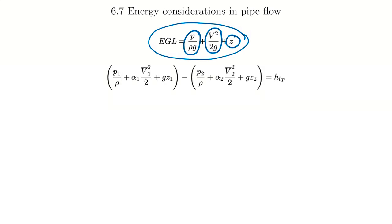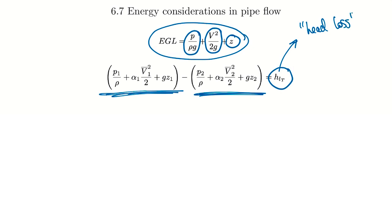At one section of a pipe we have mechanical energy terms, and at a second section we have mechanical energy terms. If it were just Bernoulli flow those would be equal, but friction causes a difference between them — that term is called head loss. Friction generates heat, so when we look at an energy balance, this term accounts for the thermal energy generated from friction, including internal energy and heat transfer terms. We call that head loss in pipe flow considerations.